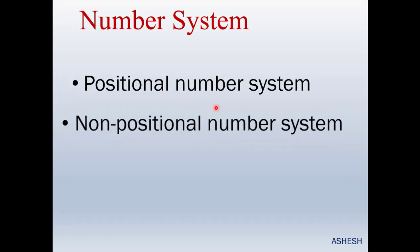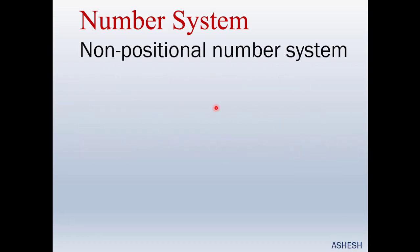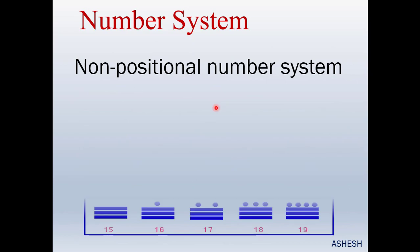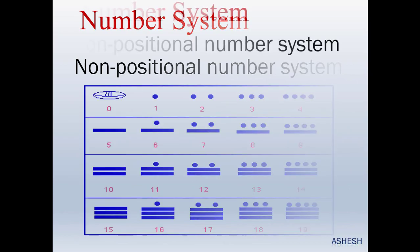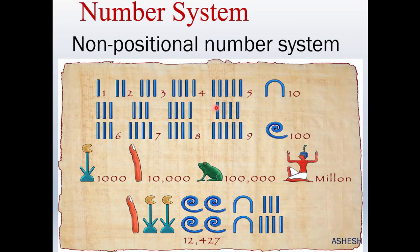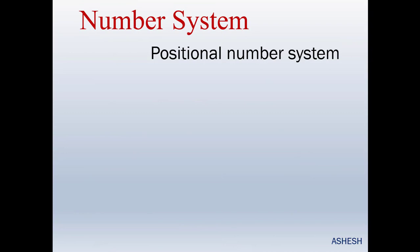There are two types: positional number systems and non-positional number systems. The picture shows non-positional numbers. This also shows non-positional number systems, and this shows positional number systems.